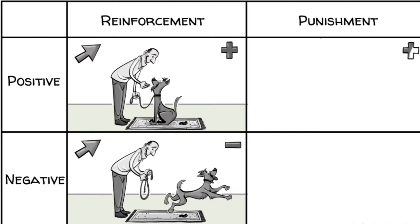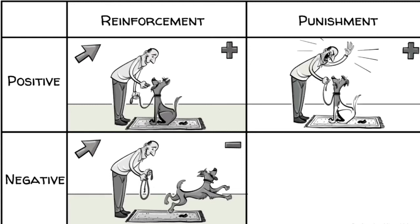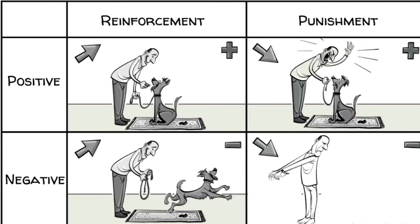If punishment is positive, we add an unpleasant response to decrease behavior. When punishment is negative, we also want to decrease behavior, now by removing something pleasant, like the comfy carpet.